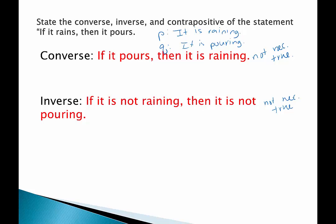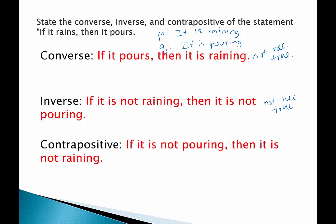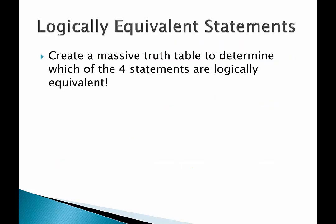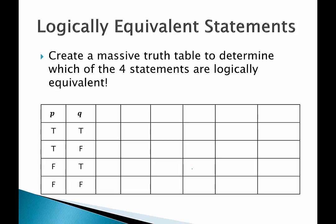What about the contrapositive? That's when we flip and negate: if it is not pouring then it is not raining. This one is true based on the conditional statement being true. So we can confirm that the contrapositive is always true if the conditional statement is true. But what's the deal with the converse and inverse? We're going to create a truth table to verify that a conditional statement is logically equivalent to the contrapositive. Logically equivalent means they have the same truth value on every single row.